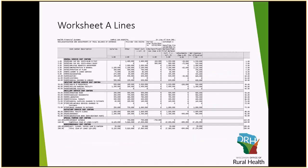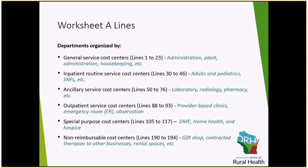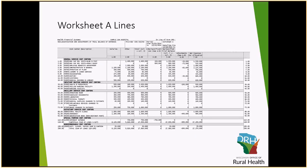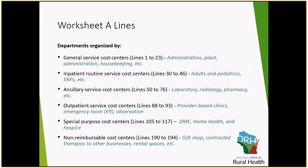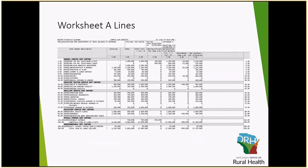Lines 1 through 23 are your general service cost centers — all your administrative and overhead cost centers. On Worksheet B, which we'll cover in the next video, we show how we take different statistics and allocate out all of these overhead cost centers down to all of the revenue-producing cost centers, which are contained within lines 30 through 194. Those are all the non-reimbursable cost centers, and we'll detail that in the next video. This is just the basic breakdown of how expenses are reported in the different cost centers.